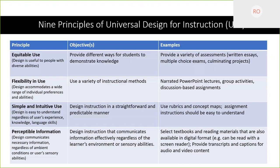The next principle is called perceptible information, and it really attends to students who might have some sort of sensory disability — a hearing impairment or blindness, for example. In the Bryan School, we have a student who is blind and is in one of our online programs. When designing for him, we have to take a number of things into account. For perceptible information, you may want to include textbooks in a digital format — for example, Pablo, our student in the business school, cannot read a hard-copy textbook.